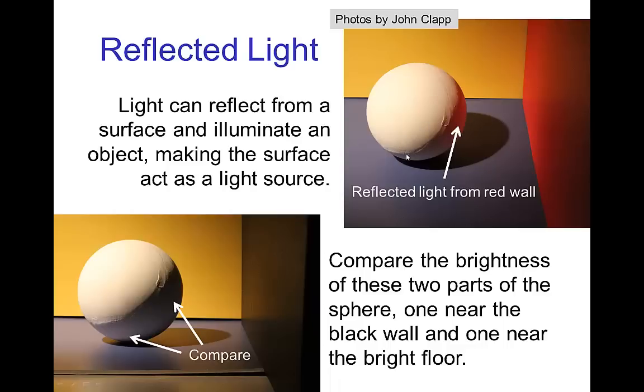However, due to the proximity of this illuminated red wall behind the sphere, we see a red light shining from that red wall illuminating the back of the sphere. The second photo is another example, in this case you can compare the back of the sphere that is closest to the dark black wall compared to another part of the sphere which is closer to the bright blue floor.